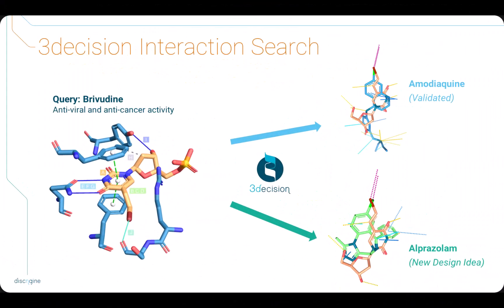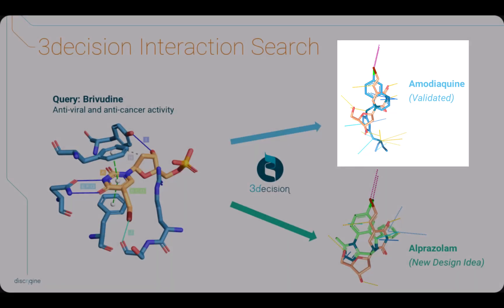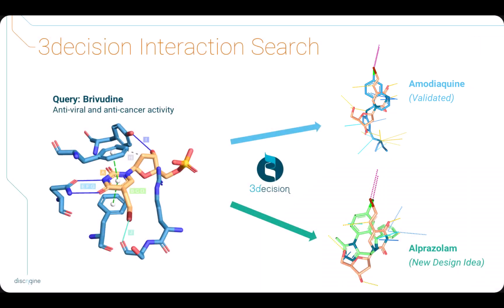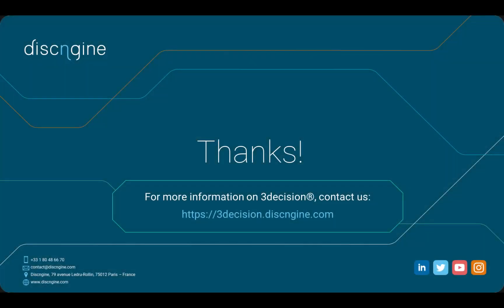In conclusion, we first validated the results from the paper by finding amodiaquine with the 3Decision Interaction Search, but we also showed how you can use this search to explore the entire PDB to generate new ideas that could help your design process. Thank you for watching. If you want to learn more about 3Decision, visit our website and do not hesitate to contact us.